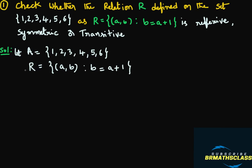If you observe this relation, it is in set-builder form. If we write this relation in roster form — roster form means all the elements are listed and separated by commas within flower brackets — it is easy to check whether it is reflexive, symmetric, or transitive. Here, a and b are both elements in set A.